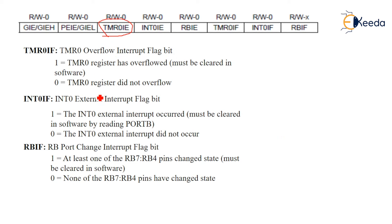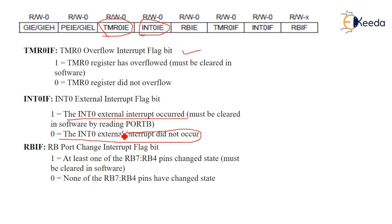INT0IF is associated with INT0IE — the flag indicates whether the external interrupt has occurred. If it is 1, the external interrupt has occurred; if 0, it has not. RBIF is associated with RBIE — the port change interrupt flag. If at least one of the RB7 to RB4 pins has changed state, RBIF is set to 1. If there is no change in the state of these pins, it remains 0.